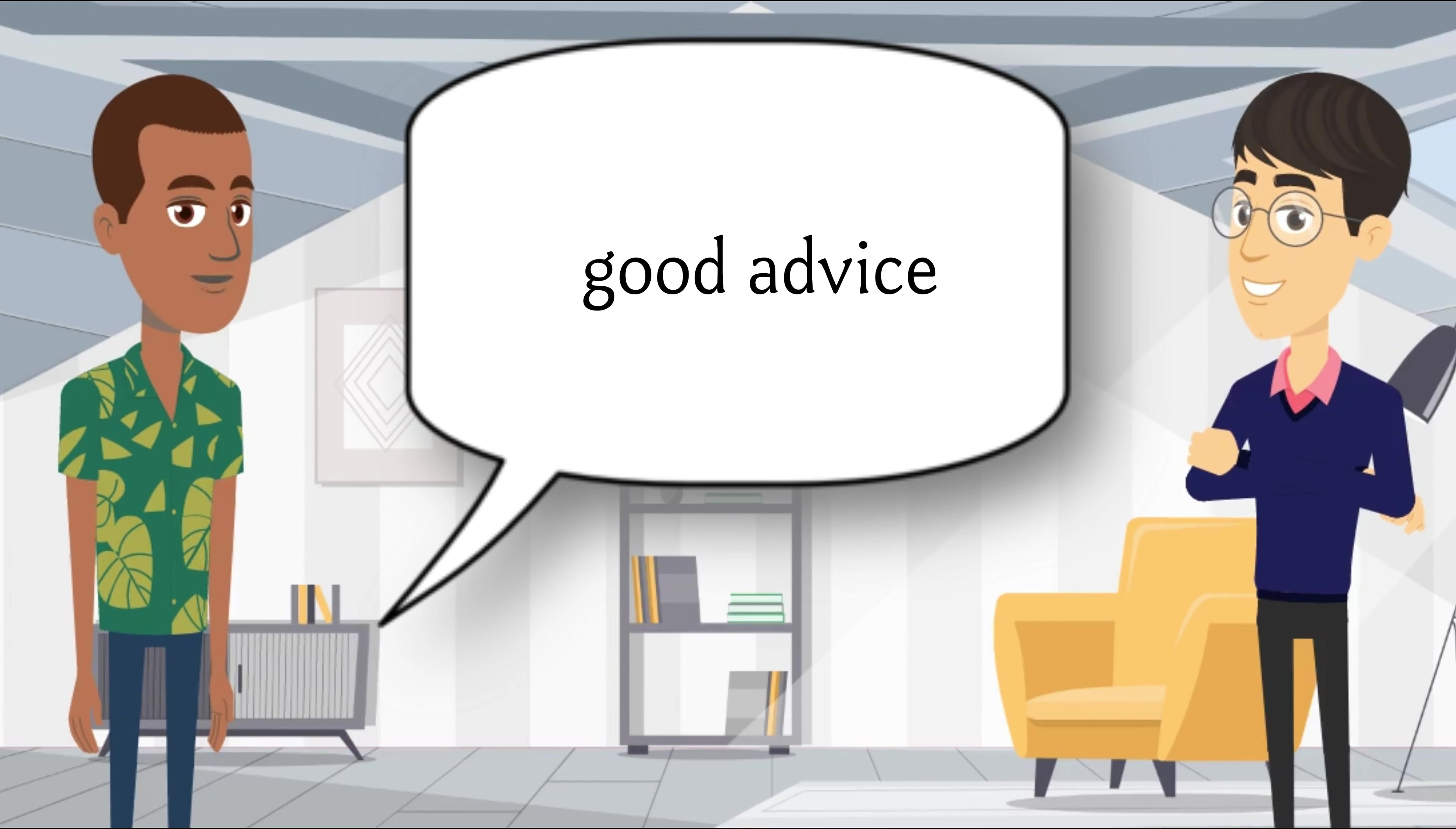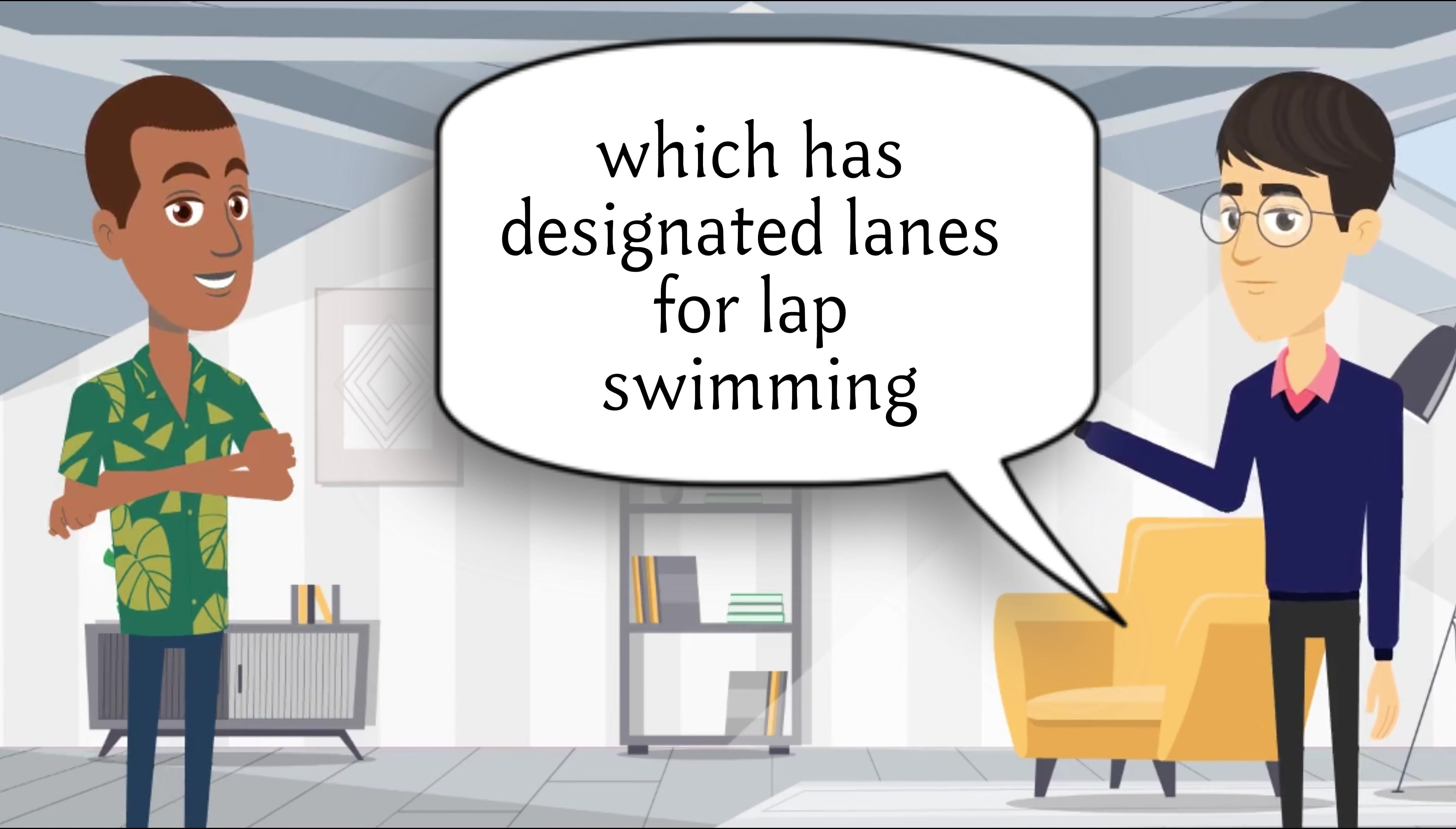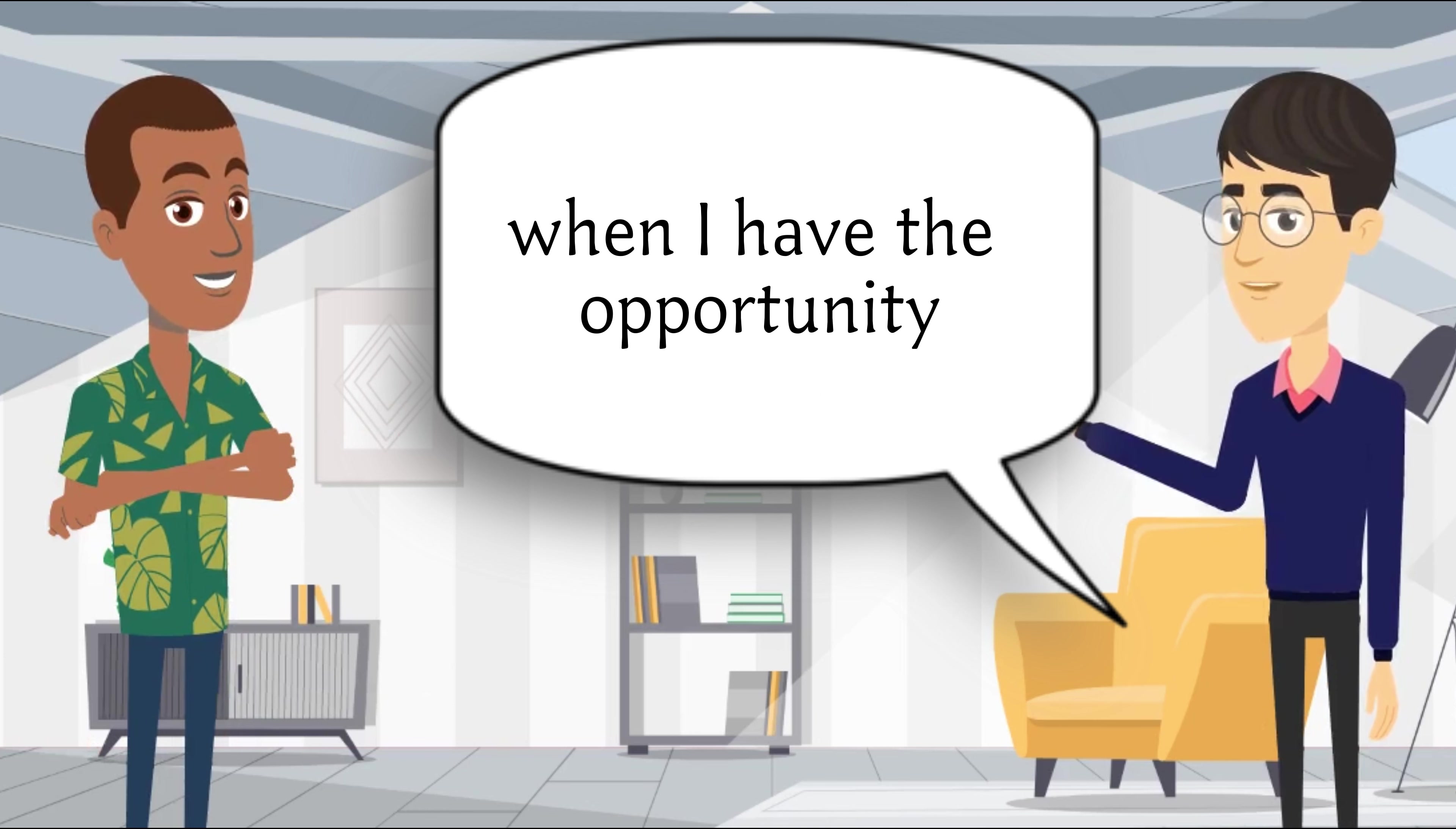Good advice. How often do you swim, and where do you usually go? I try to swim at least three times a week. I have a membership at a local swimming pool, which has designated lanes for lap swimming. It's a convenient and safe place to practice. I also enjoy swimming in natural bodies of water like lakes or the ocean when I have the opportunity.